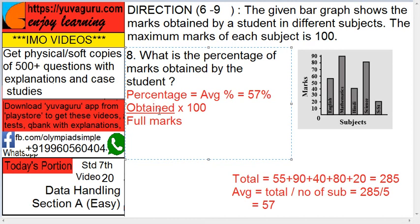So 285 upon 500 into 100. You get the same answer. 285 upon 5 is 57, then 100 gets cancelled. So 57 percent, same answer.